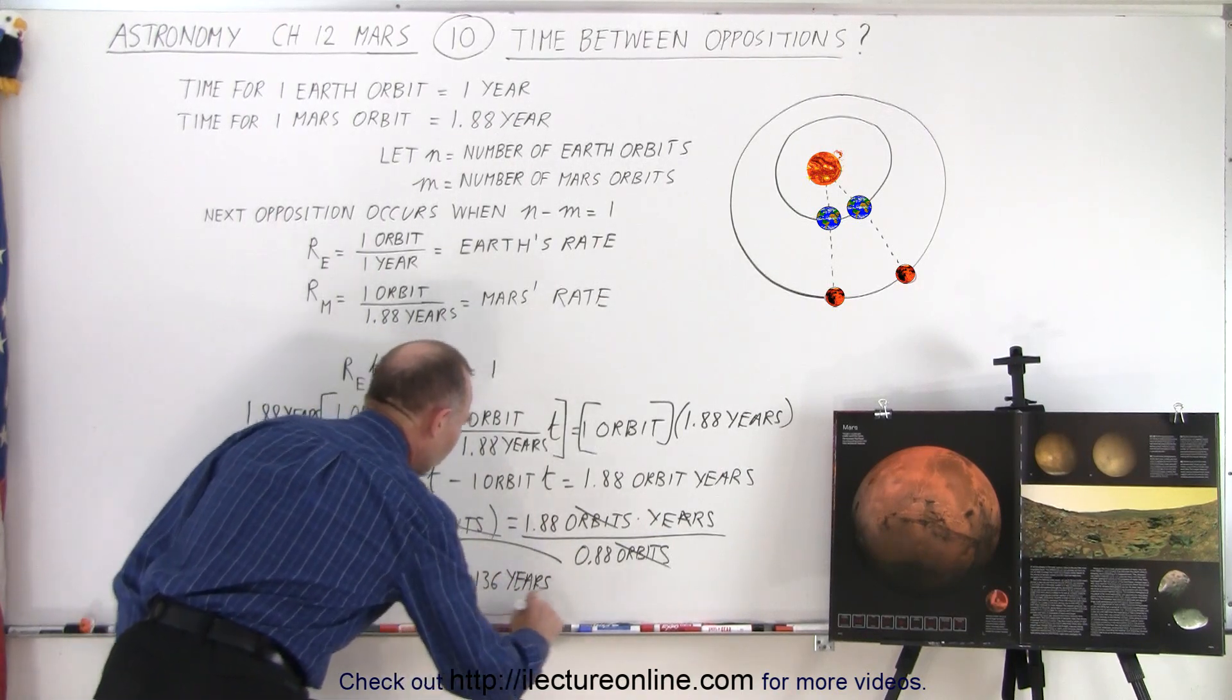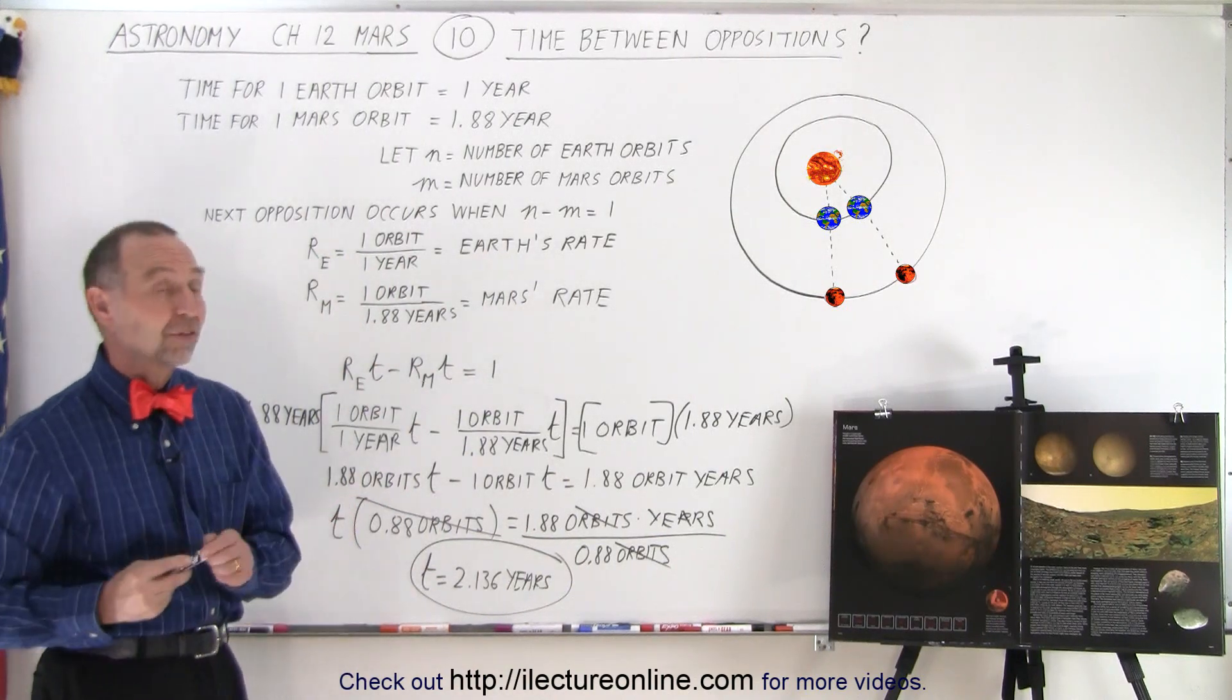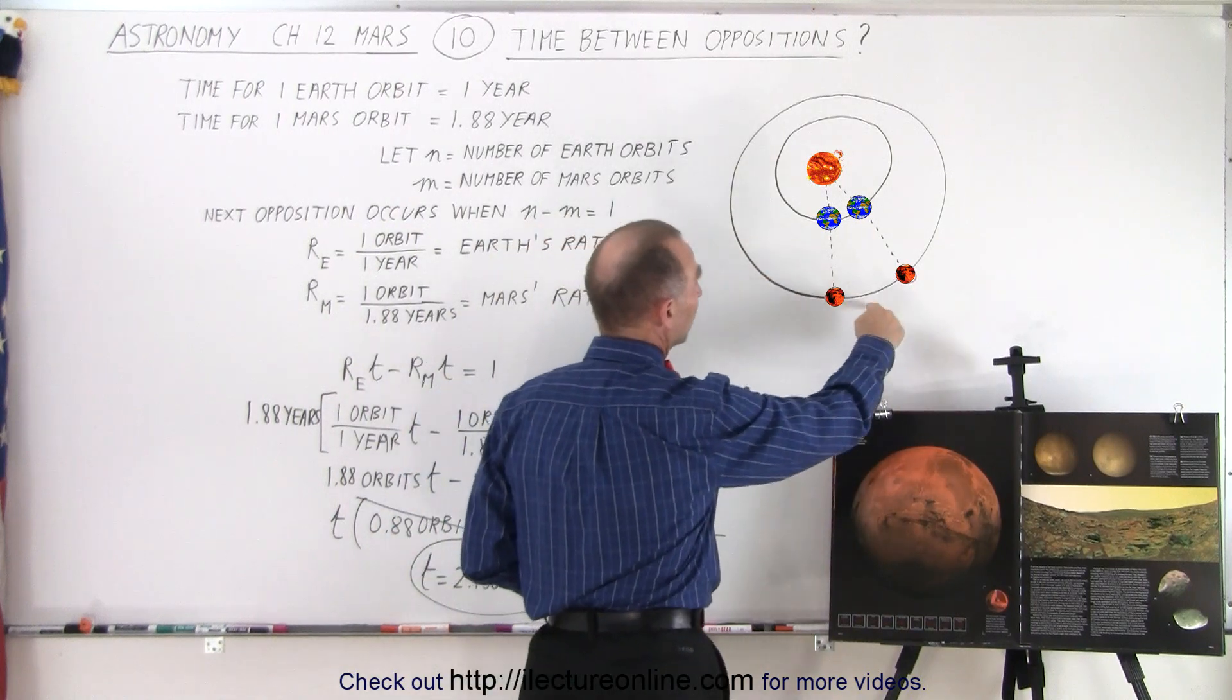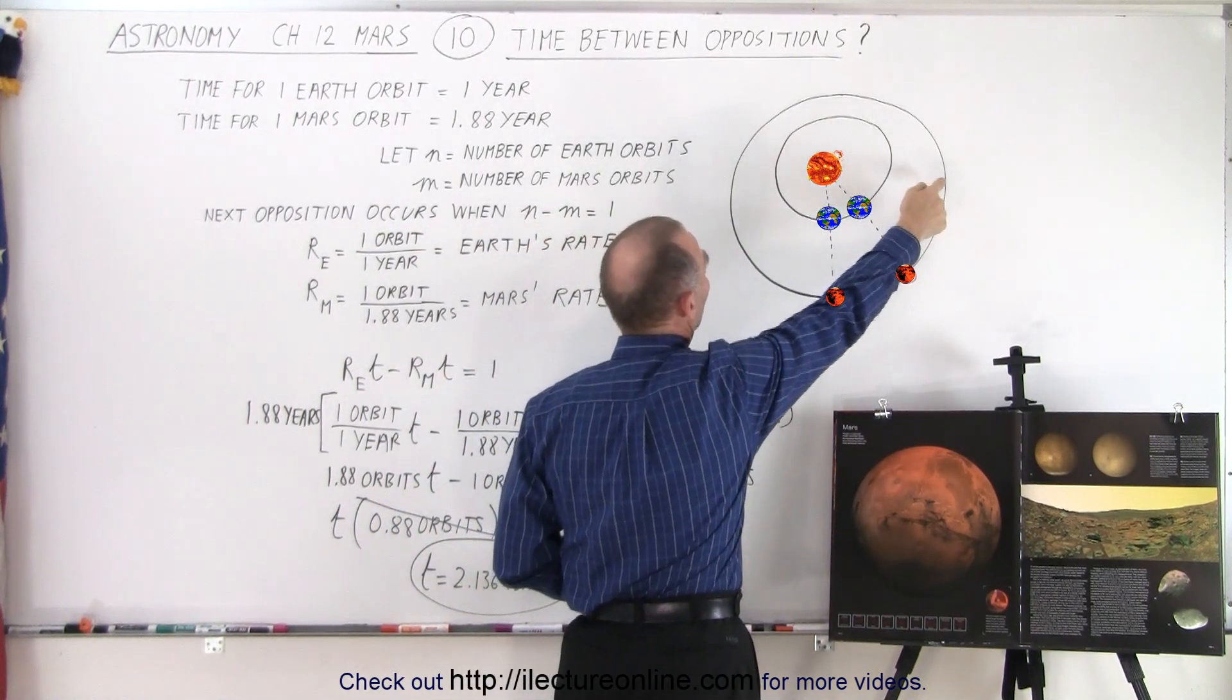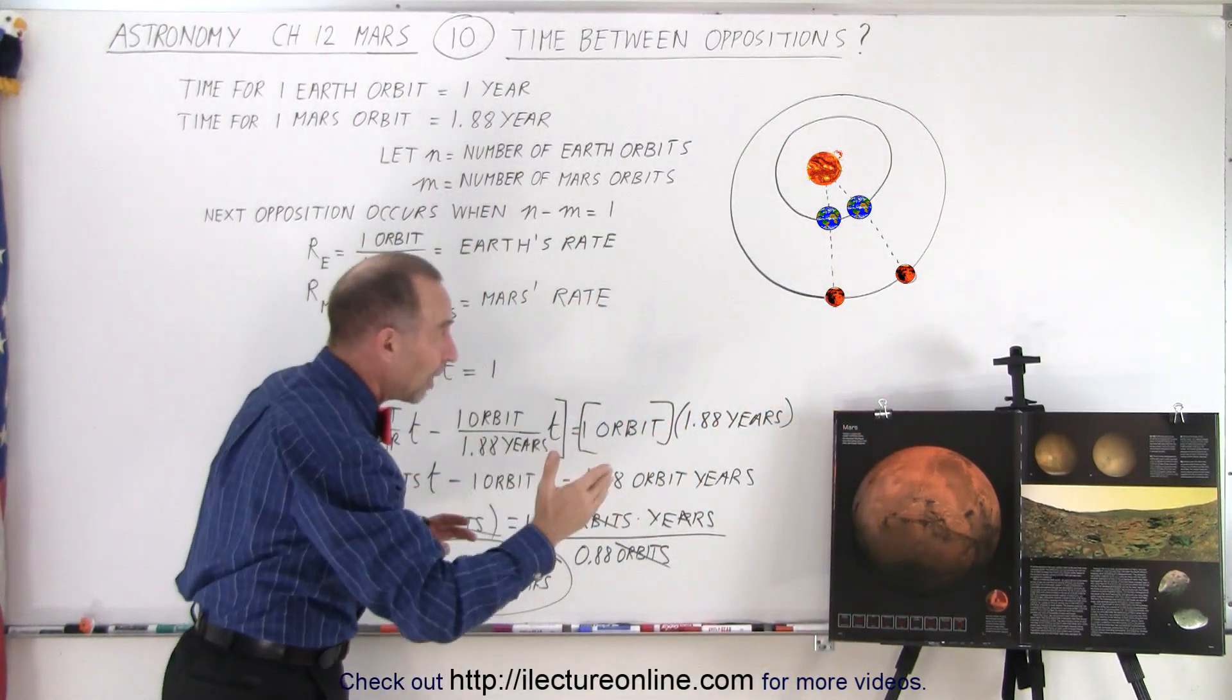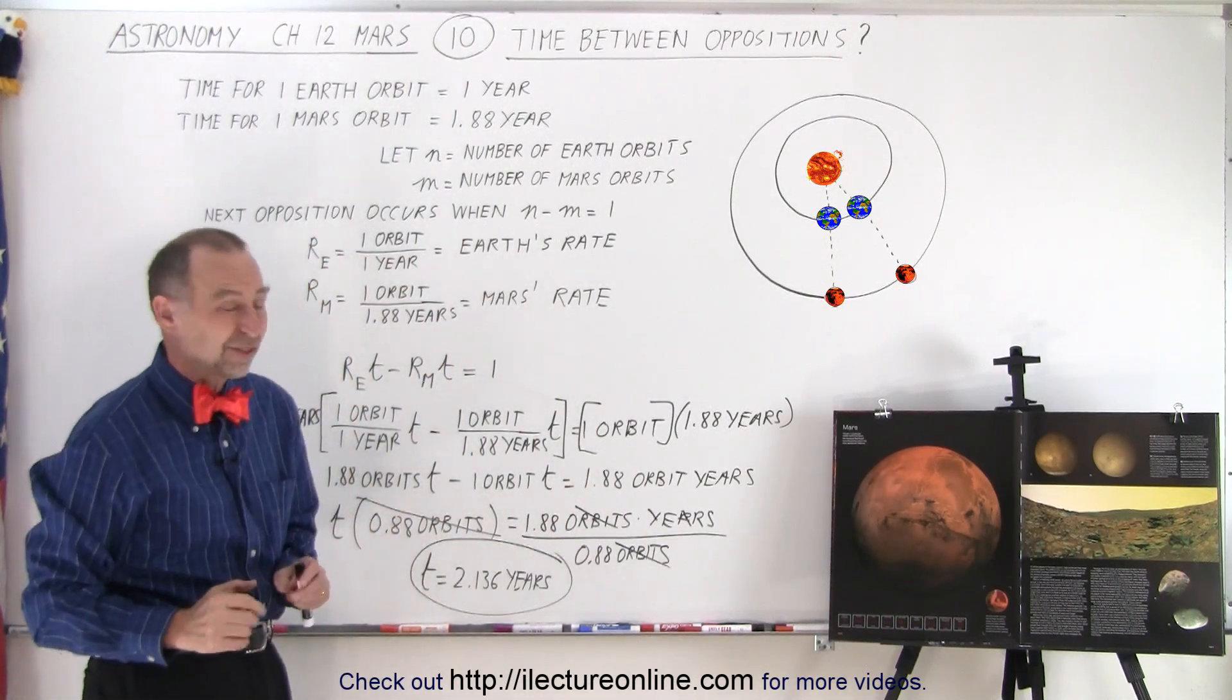Now that's of course the average time because depending upon where in the orbit this is occurring, notice at this point Mars moves slower and Earth will move faster. Over here, Earth will move slower and Mars will move faster. So it's not quite the same number from one opposition to the next opposition. But on average, it will be 2.136 years.